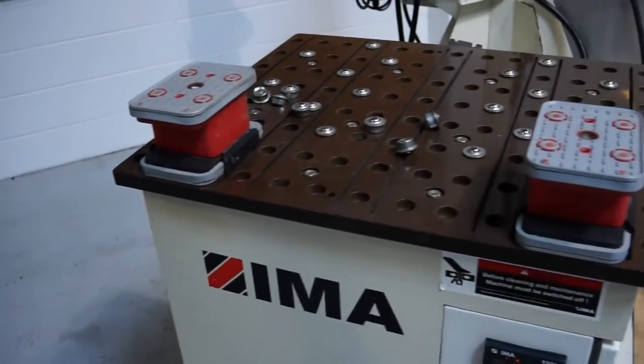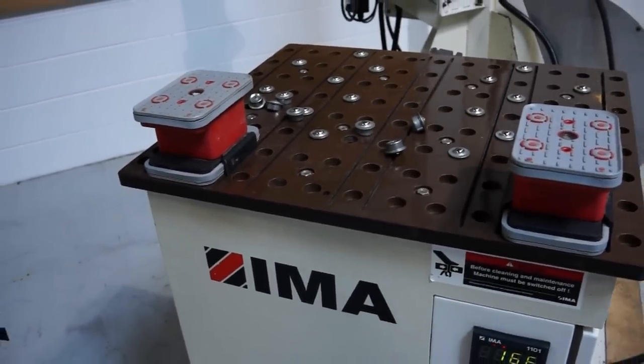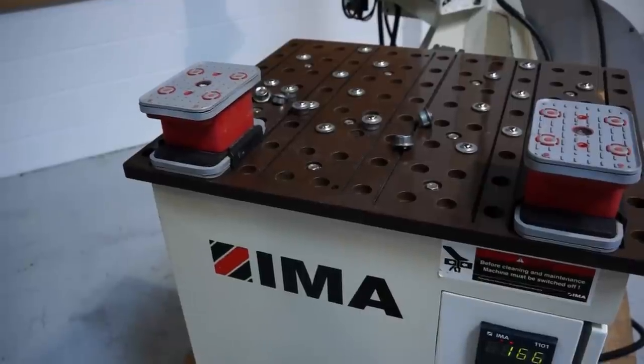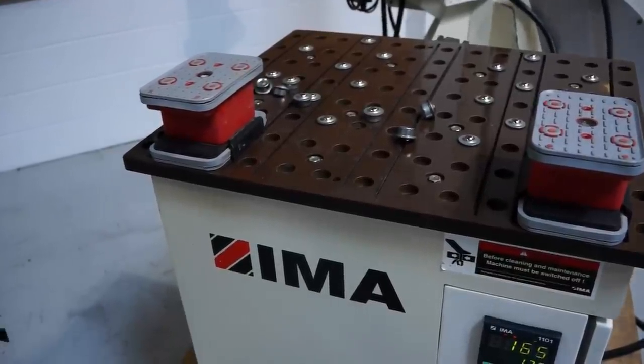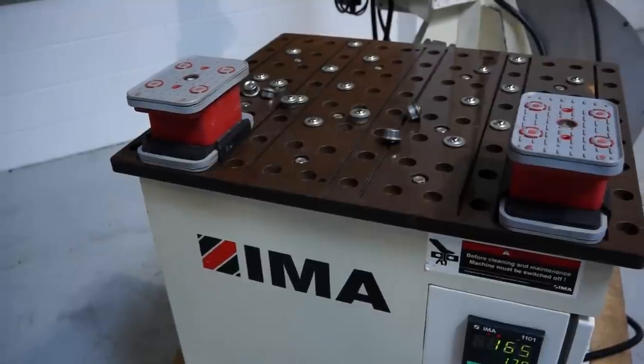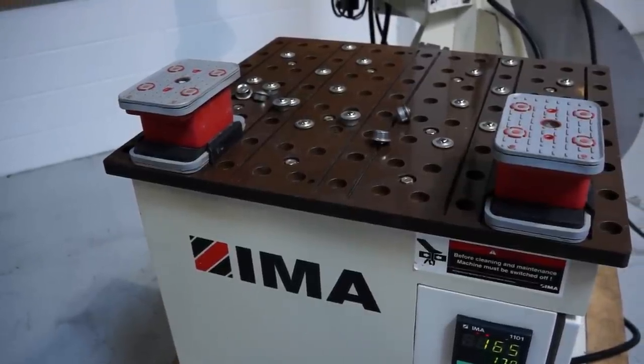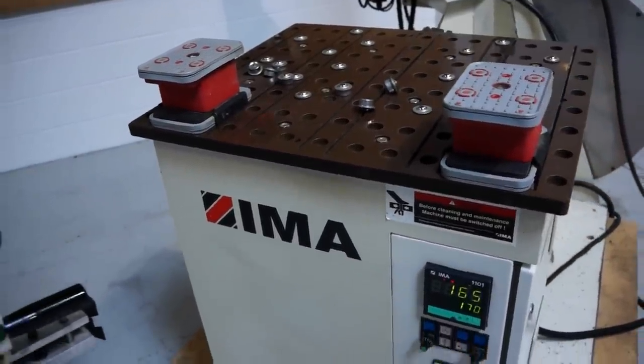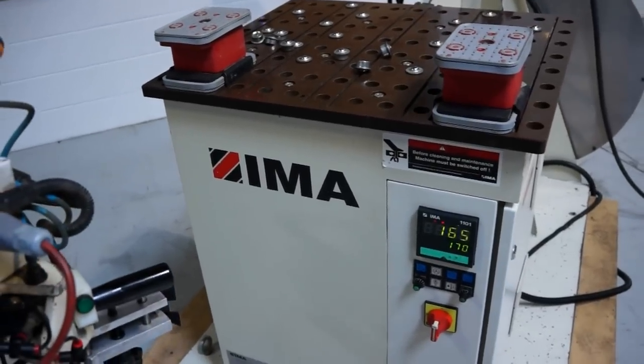You lock your workpiece down with the vacuum. It's really quick and easy. It allows you to switch from square workpieces, round workpieces, ellipticals, two-foot by two-foot workpieces to six-foot by three-foot workpieces in literally seconds. Really low changeover time on this machine.